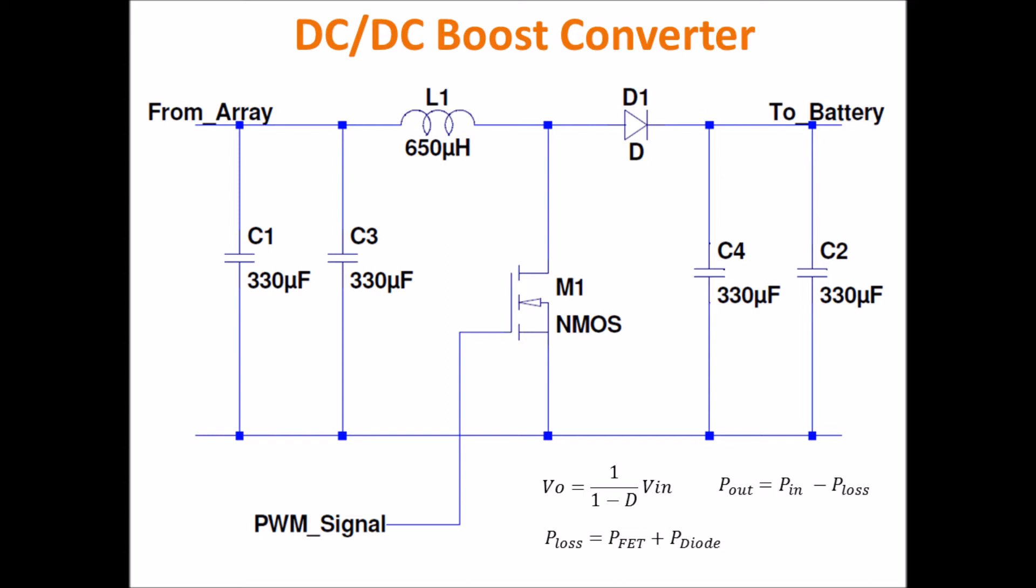Since we want a highly efficient MPPT, we selected a MOSFET with a low on-time resistance and a diode with a low forward voltage drop in order to help decrease the power loss of the system.